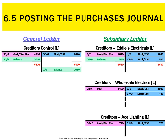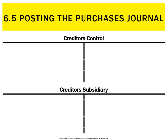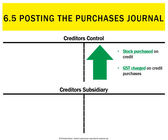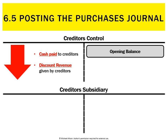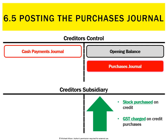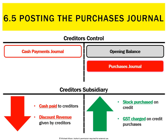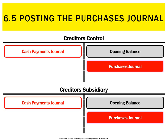When we balance out creditors control we get a balance of 2010, and that must match up to the individual balances of each creditor: Eddie's Electricals balances at 990, wholesale electricals at 1020, and Ace Lighting at zero — totalling 2010. In summary, creditors control and the subsidiary accounts go up on the credit side for stock purchased on credit and GST charged on credit purchases, and go down when we pay creditors and receive discount revenue. The opening balance is always a credit, purchases journal info is a credit, and the cash payments journal is a debit.